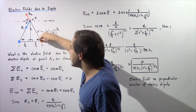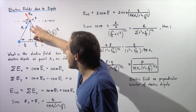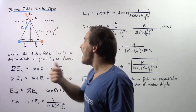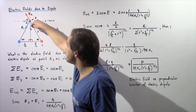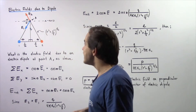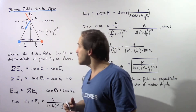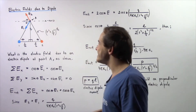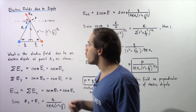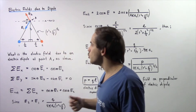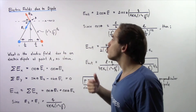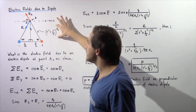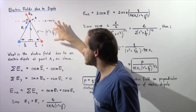Let's call this angle theta, and this is our 90-degree angle, which means the remaining angle is simply 180 minus 90 minus theta. By the Pythagorean theorem, the length of the hypotenuse is R squared plus L divided by 2, the whole quantity squared, raised to the power of one half.